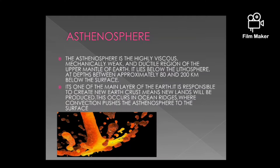Asthenosphere. The asthenosphere is the highly viscous, mechanically weak, and ductile region of the upper mantle of earth. It lies below the lithosphere at depths between approximately 80 and 200 kilometers below the surface. It is one of the main layers of the earth and is responsible for creating new earth crust — new lands are produced. This occurs at ocean ridges where convection pushes the asthenosphere to the surface.